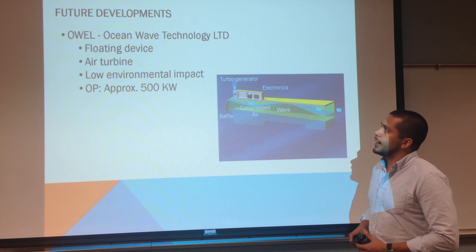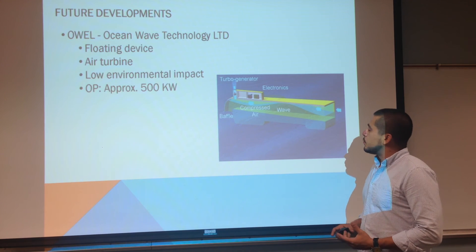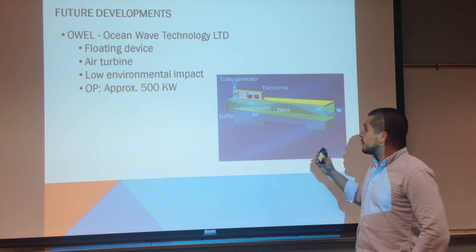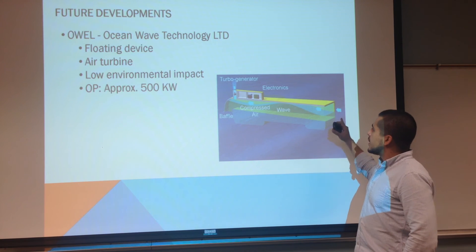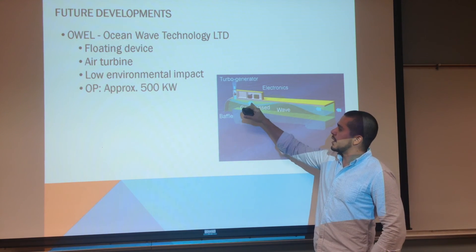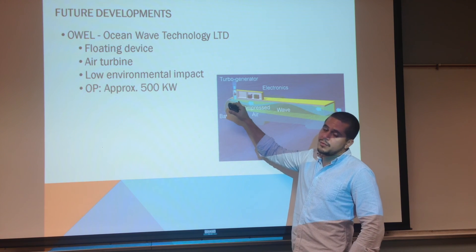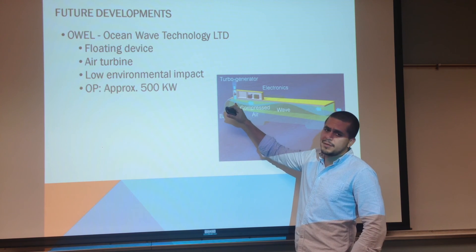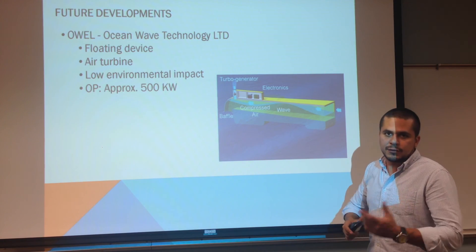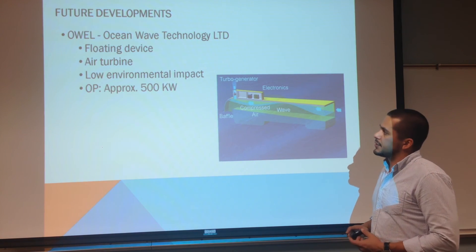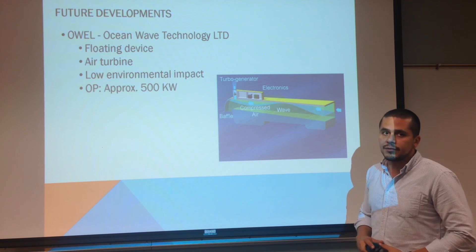The OWL, from Ocean Wave Technology, is a floating device that takes advantage of the velocity of waves to create high-pressure areas inside the device. When those high-pressure areas reach the bottom of the device, they push air through a turbine that transforms this energy into electrical energy. The operational capacity is approximately 500 kilowatts.